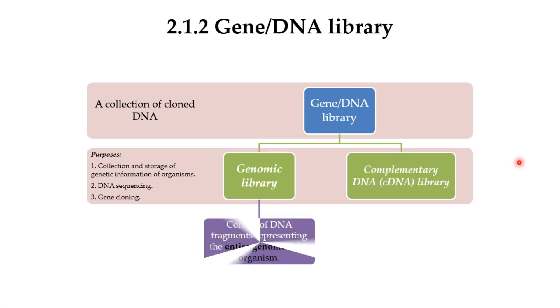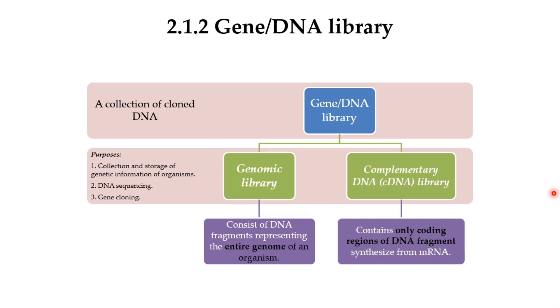A genomic library consists of DNA fragments representing the entire genome of an organism, including both exons and introns. A cDNA library contains only the coding regions of the DNA — the exons — which are synthesized from mRNA. Synthesizing a cDNA library will be discussed in the next subtopic.